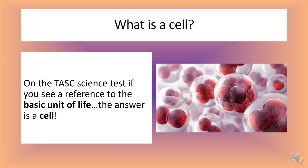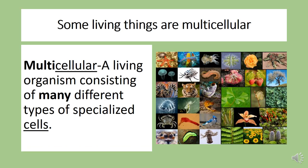So what makes a cell a cell? The answer is: it depends. The first question we need to answer is whether the living organism is simple or complex — are we talking about something complicated like a human, or something basic like bacteria? Humans fall into the complex category. We like to eat, laugh, and communicate, along with a host of other activities that require an immense amount of processes. To achieve all these things, we need cells that are complex.